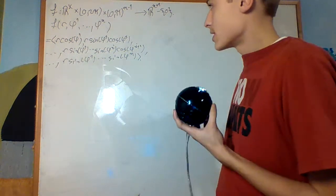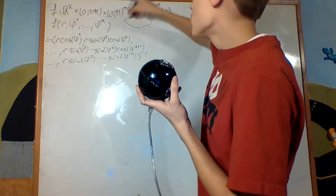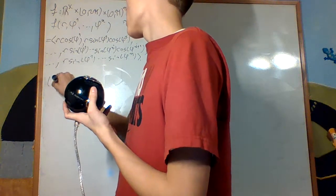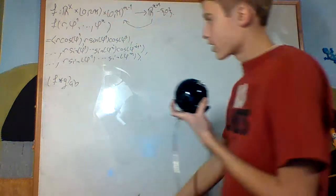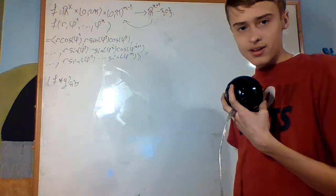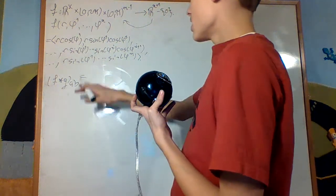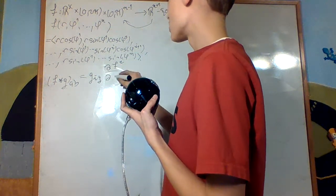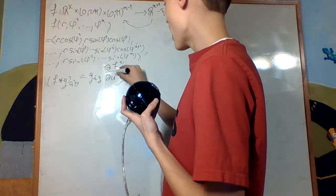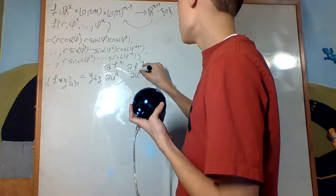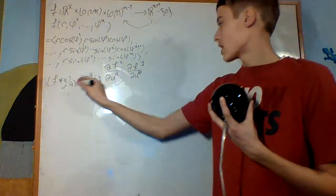Now we have this representation. Let's calculate the pullback metric — we'll pull back the metric. The pullback metric along F in the AB coordinates — this is a tensor field, covariant because it takes in two vector fields — will be g_{ij} times the partial derivative of F^i with respect to the chart map u_A, times the partial derivative of F^j with respect to u_B, with Einstein summation convention on both i and j.